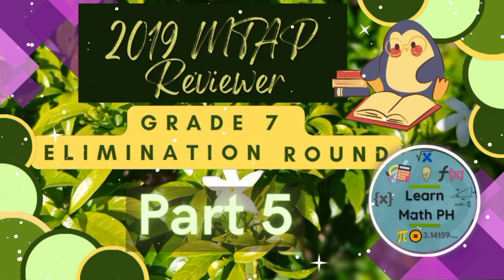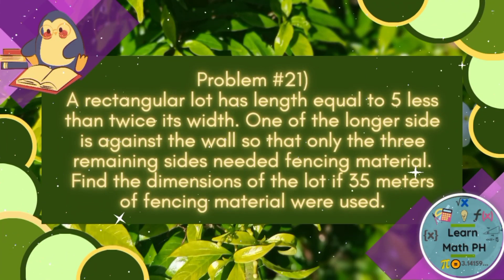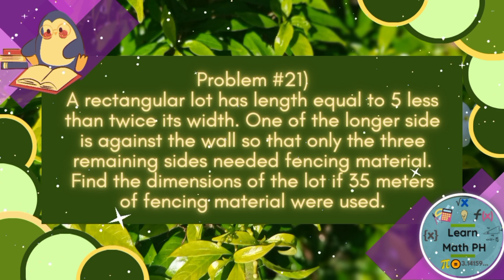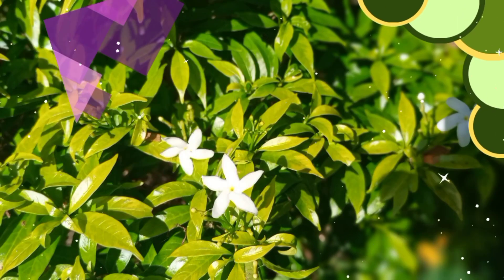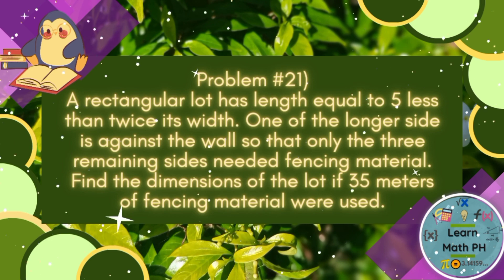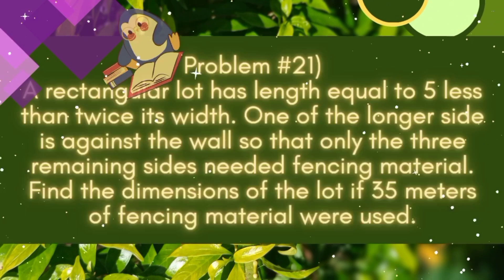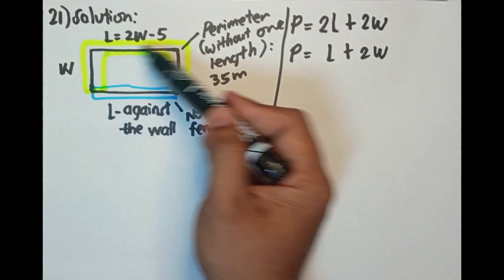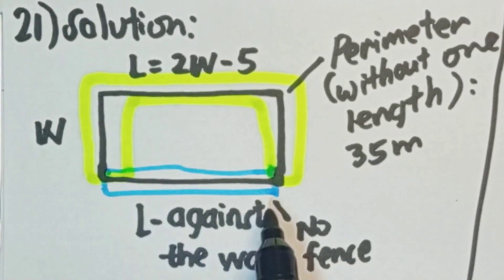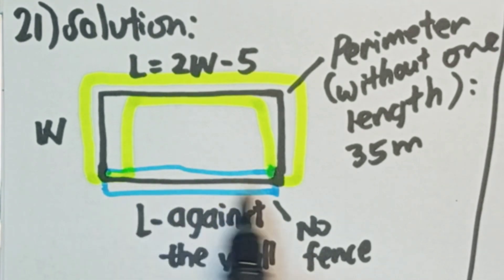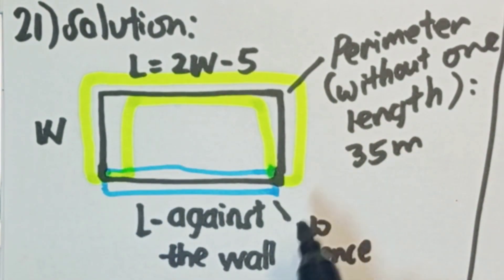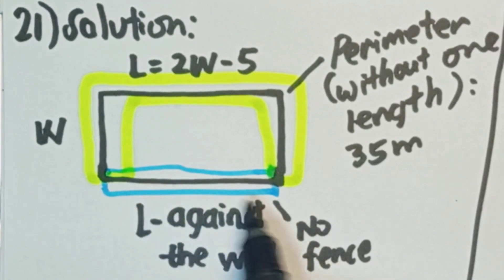Dito na tayo sa number 21. A rectangular lot has length equal to 5 less than twice its width. One of the longer sides is against the wall, so that only the three remaining sides needed fencing material. So ang ating solution dito guys is, ito yung rectangular lot. Nakita nyo yung may color blue, this is the length na against the wall. Ito walang fence. Itong may yellow, itong three sides na to, yun yung may fence. Pero ito wala, kasi nga may wall dito sa blue na to.